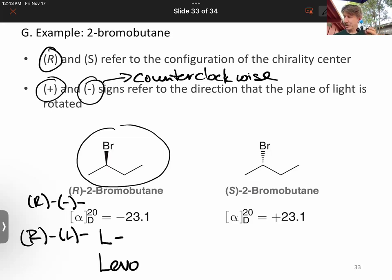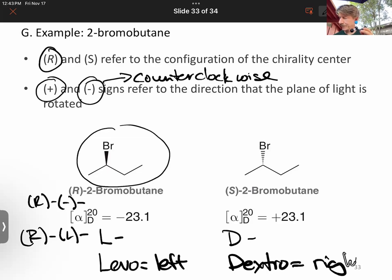Then the other one would be S, and it will also be called D for dextro. And again, levo means left in Greek, dextro means right in Greek, and that's as opposed to rectus and sinister, which are the Latin words for right and left.